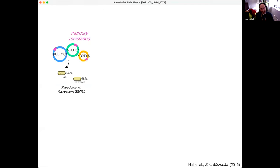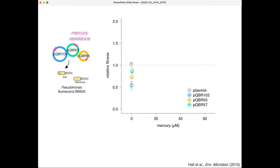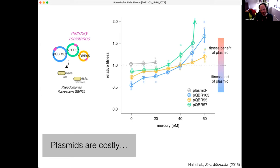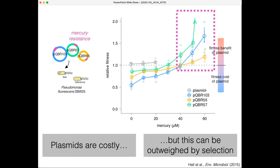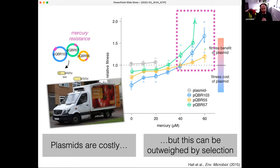To understand how selection affects plasmid carriage, we can take these plasmids, put them in a test strain, and do competition assays — head-to-head competition between plasmid-free and plasmid-containing strains — to measure relative fitness. What we find is that plasmids have a fitness cost, which is well established throughout plasmid biology. With mercury resistance plasmids, although they have a fitness cost when there's no mercury around, we can add mercury and these plasmids become beneficial. We might think of plasmids as a toolkit or delivery van — the bacteria needs a new trait, and the plasmid is a vehicle that delivers it.